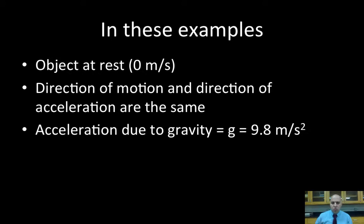So let's go over a few assumptions in these examples. First of all, in these examples, the object is starting at rest. It's zero meters per second. It's not going anywhere, or it's not moving anywhere at the time. Also, the direction of motion and the direction of acceleration are the same. In this case, it's a positive acceleration because it's speeding up.